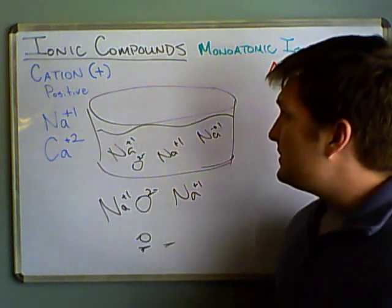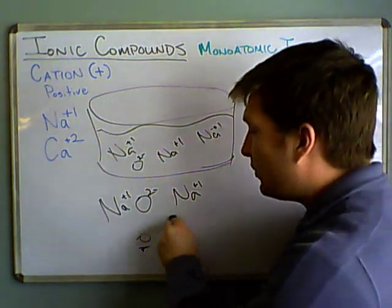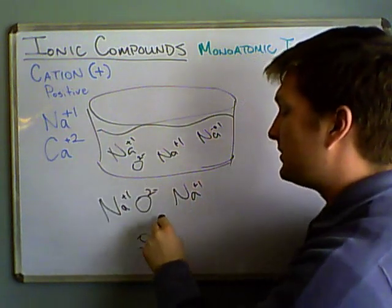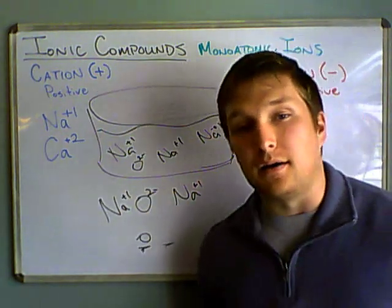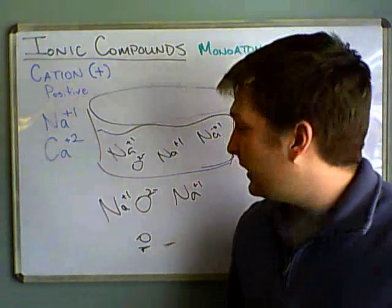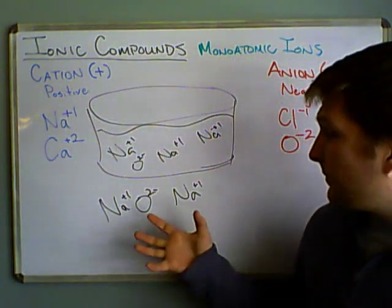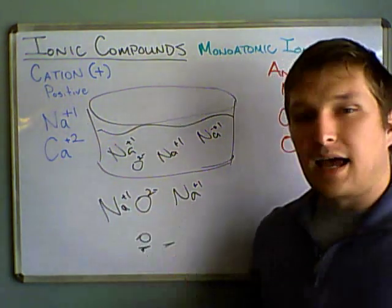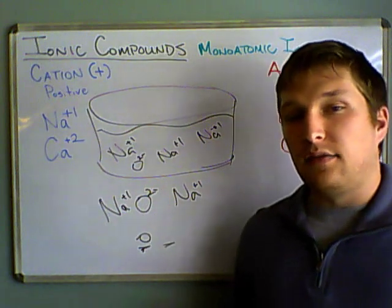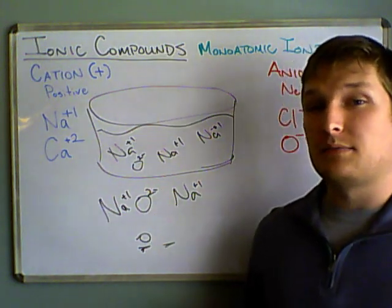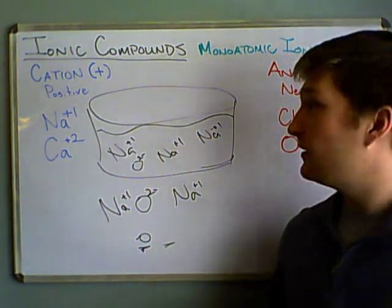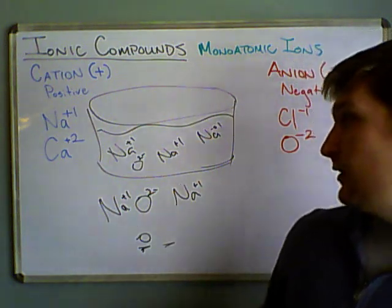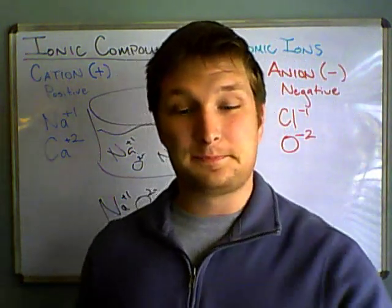So, this is now what we call an ionic compound. And we say that these form ionic bonds, which are very strong. And basically, it holds all these atoms together. Now, the next video, we're going to talk about how we name something like this and we're going to go into a bit more complicated examples.